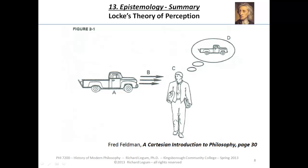Here we are — Feldman representing us, C — and what happens is we get this sensation, or a picture, sort of in the mind, wherever the mind is. We're not taking sides on the mind-body problem right now. But the thing out there in the world causes me to have a sensation, an idea of the truck. The sensation is sort of an idea of the truck, and it's an idea that resembles the truck. This is what happens, according to Locke, in the standard cases of perception.